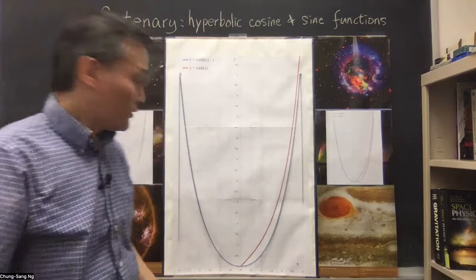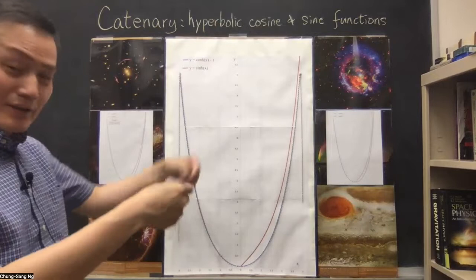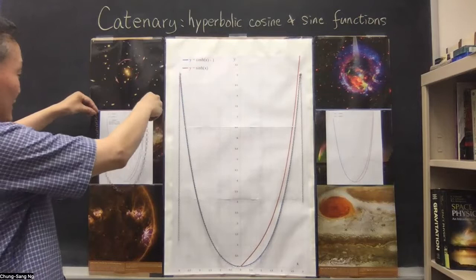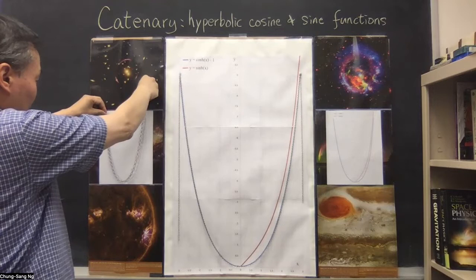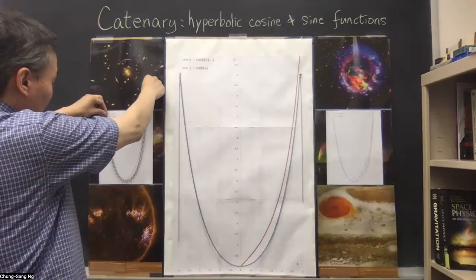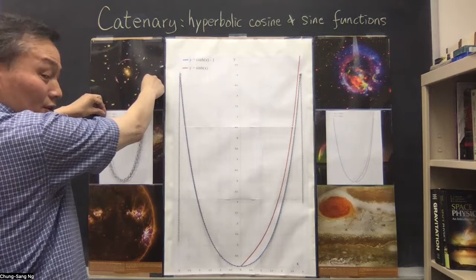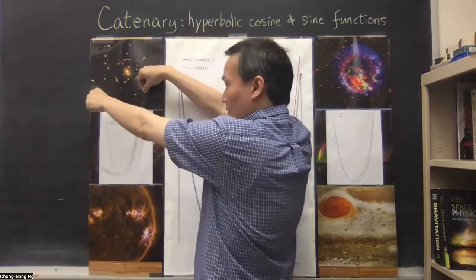If you don't have a large printout, you can test using the small printout and use a shorter chain. You can adjust the location where you hold the two ends, and when you adjust it a little bit, the chain is still sitting on the curve pretty well.